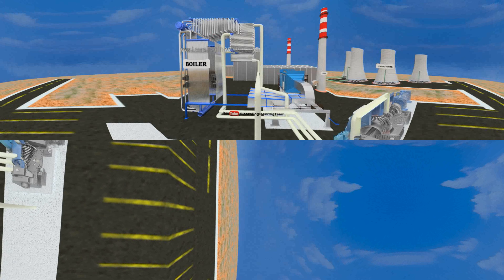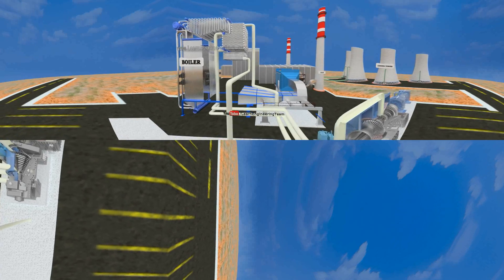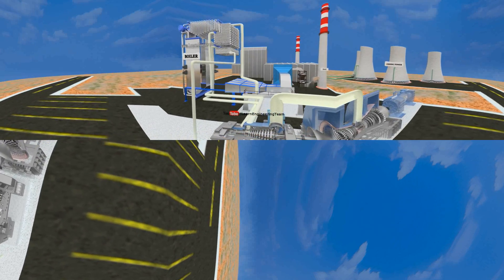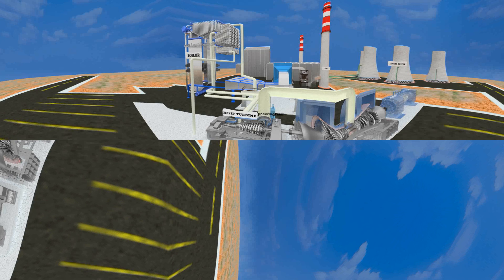Now, turn your head towards right and down where you can see the steam turbine unit of the power plant. Steam turbines are the heart of the power plant and, as you can see, large power plants typically use different stages of steam turbines. HP turbine, IP turbine and LP turbines are the three units of it. You can see how the steam flows through the system. A generator connected to the turbine unit produces power.